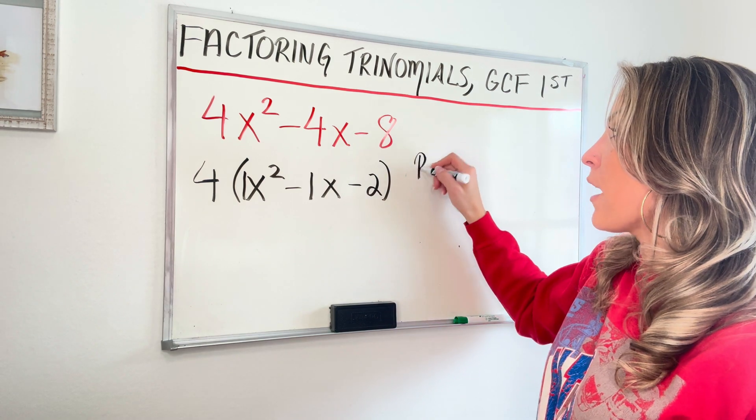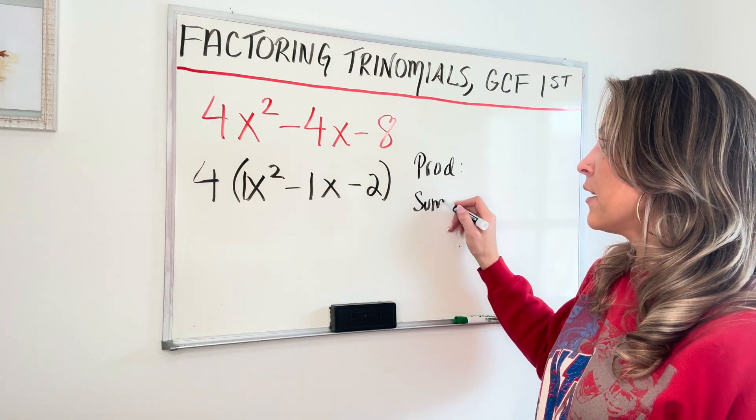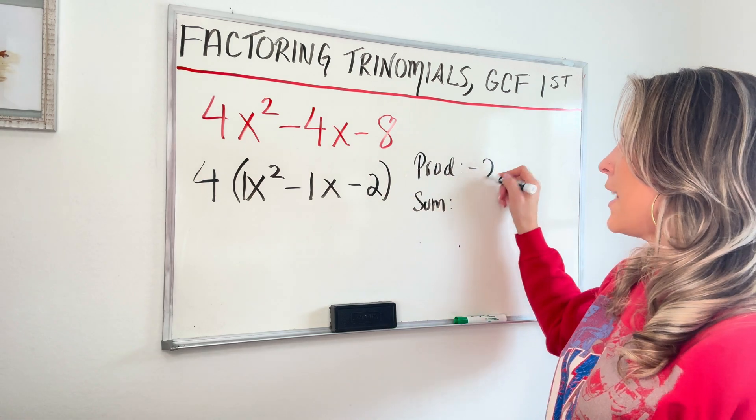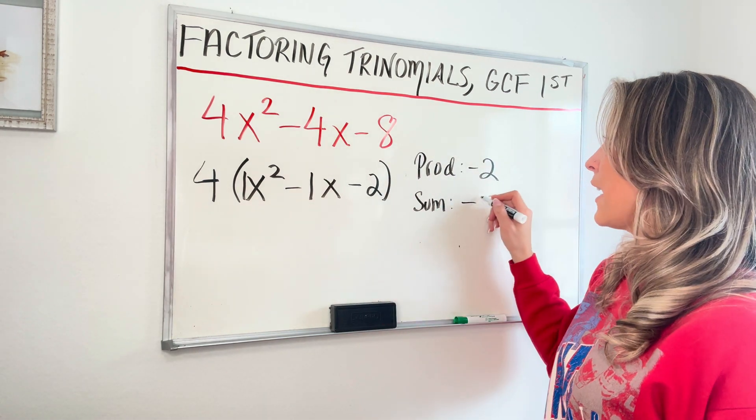So I can do my product and sum method that I learned. My product is C, so it's negative two. And my sum is B, so it's negative one.